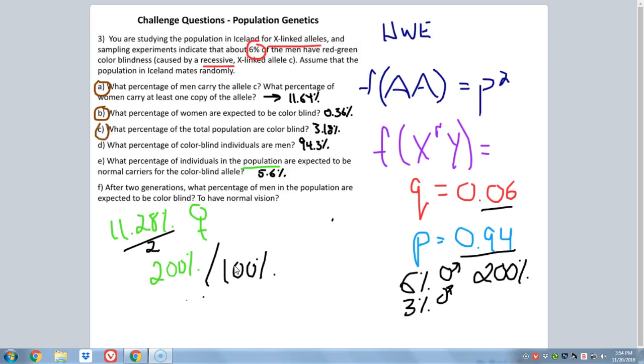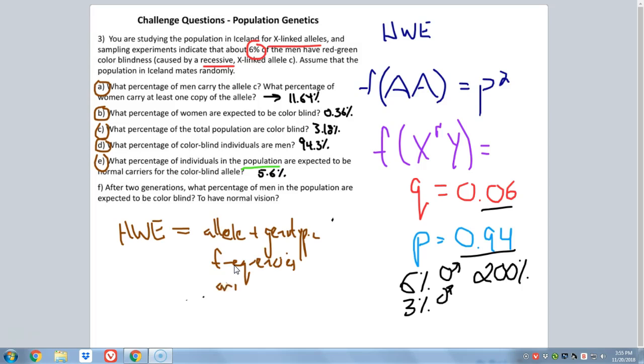Question F is my favorite question of the bunch here. After two generations, what percentage of men in the population will be colorblind, and what percentage will have normal vision? Don't need any math there. All we need to remember, in order to get that question right, is that when it comes to Hardy-Weinberg equilibrium, the main thing that that implies, the main thing that that tells us, is that all allele and genotypic frequencies are stable and predictable from generation to generation. So if 6% of the males are colorblind right now, and 94% of the males can see normal color right now, then two generations from now, 6% of them will be colorblind and 94% will be normal.